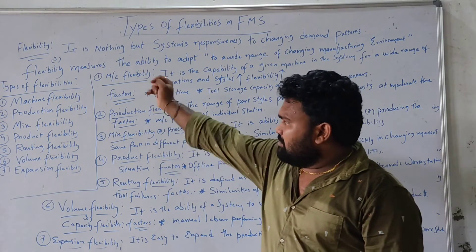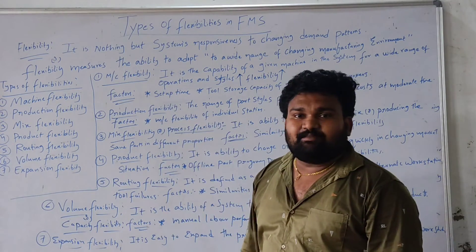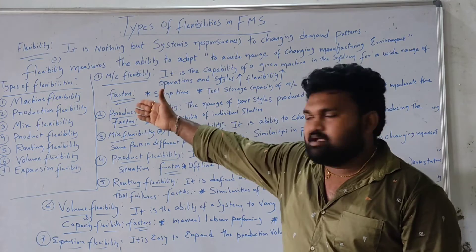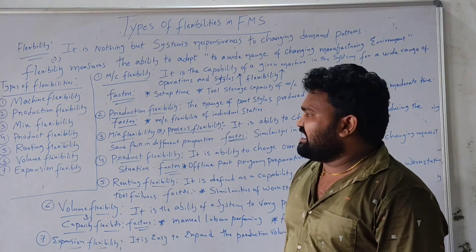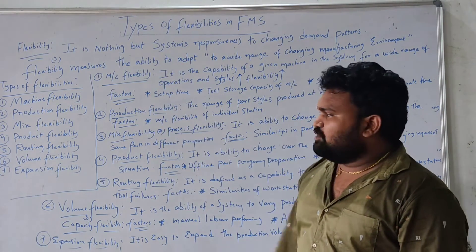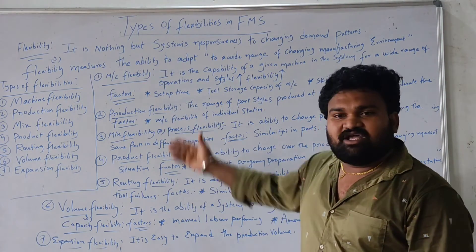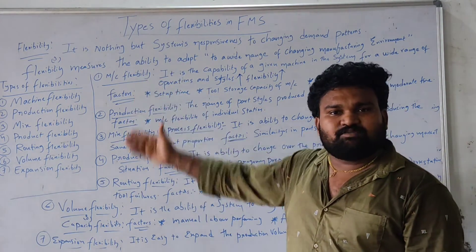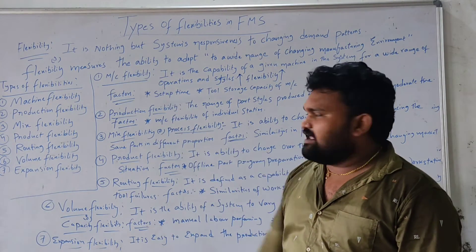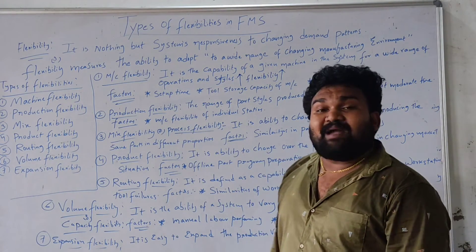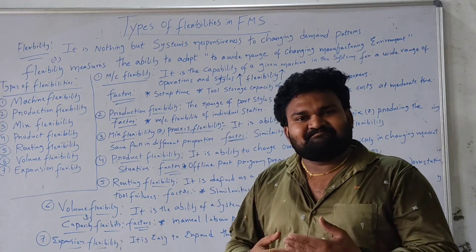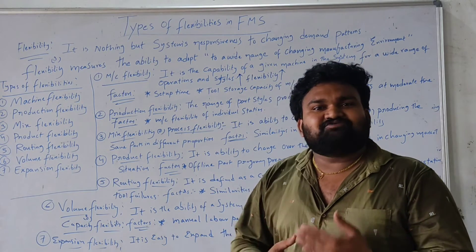There are seven types of flexibility. Number one is machine flexibility, number two is production flexibility, number three is mix flexibility, number four is product flexibility, number five is routing flexibility, number six is volume flexibility, and number seven is expansion flexibility. Let's look at each type.